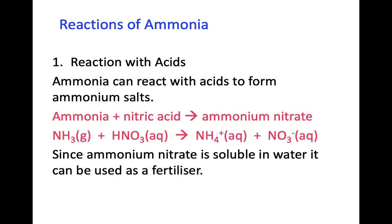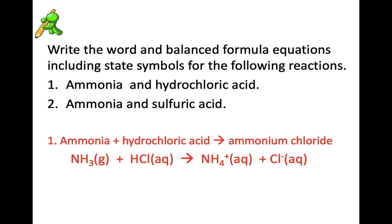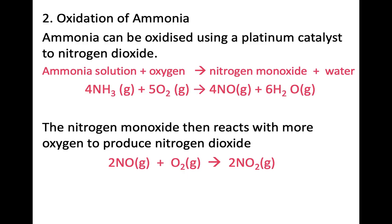Like other bases, ammonia will react with acid to produce a salt. We are to write the word and unbalanced formula equations, including state symbols, for the following reactions: ammonia and hydrochloric acid, and ammonia and sulfuric acid. Ammonia reacts with hydrochloric acid to produce ammonium chloride. NH3 is the formula for ammonia — it is a gas at room temperature. Hydrochloric acid is a solution with formula HCl. It produces ammonium chloride, which is an ionic solution made up of ammonium ions and chloride ions in solution. Ammonia and sulfuric acid produces ammonium sulfate.